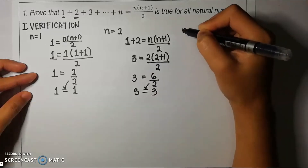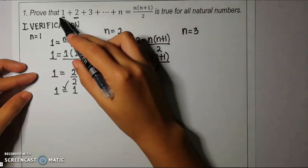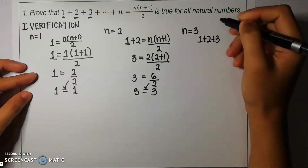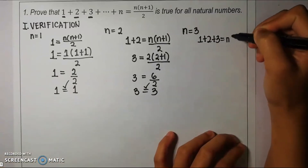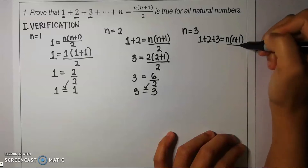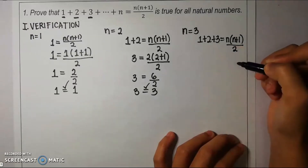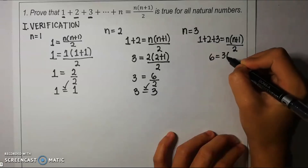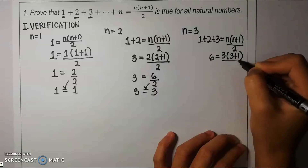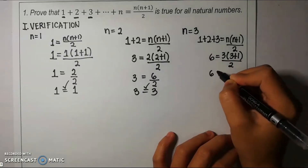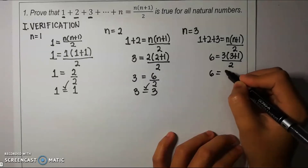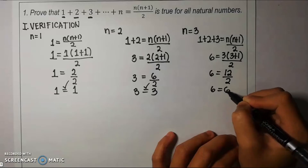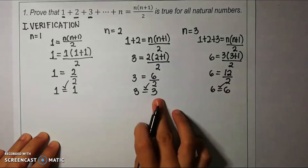For n equal to 3, we write the first three terms: 1 plus 2 plus 3, and equate with n(n+1)/2. The left side gives 6. Replacing n with 3: 3 times (3+1) over 2 equals 3 times 4 equals 12 over 2, which equals 6. Therefore 6 equals 6. All three verifications are confirmed, so we move to the next step.